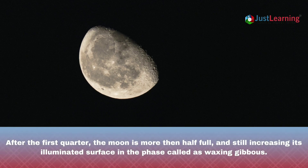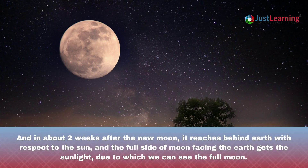After the first quarter, the moon is more than half full and still increasing its illuminated surface in the phase called waxing gibbous. And in about two weeks after the new moon, it reaches behind the earth with respect to the sun, and the full side of the moon facing the earth gets the sunlight, due to which we can see the full moon.